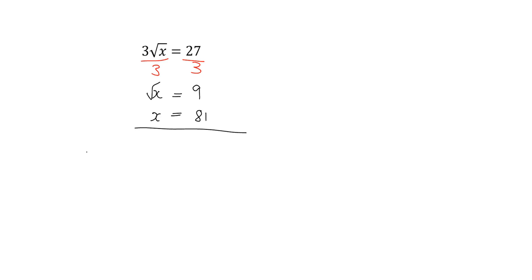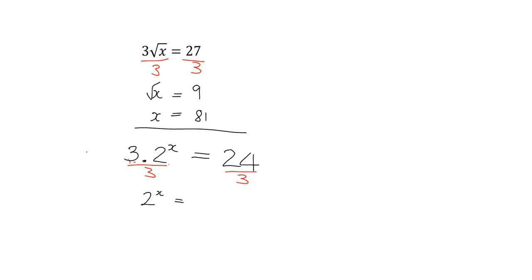The last example I want to do is ones where you end up with an exponential in the equation. These ones can be quite interesting. Say we have 3 times 2 to the power of x is equal to 24. The first thing we're going to do is get rid of this 3 — we've got multiplication, so we're going to divide by 3. Then we end up with 2 to the x is equal to 8. So we're saying 2 to some power gives us 8. The easiest way to figure out that power is to write 8 as a power of 2, in other words, with exactly the same base.